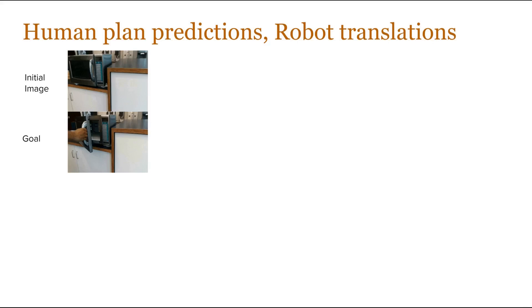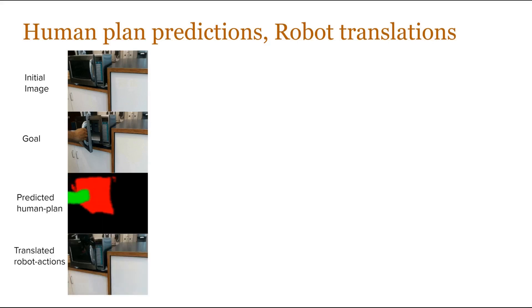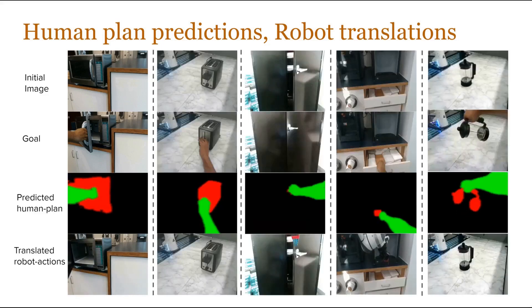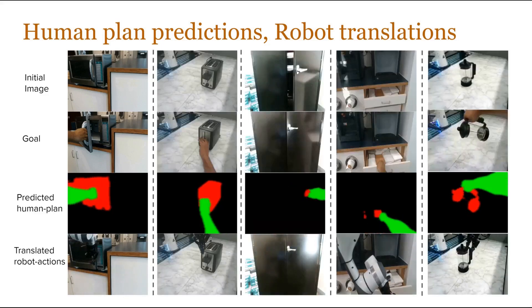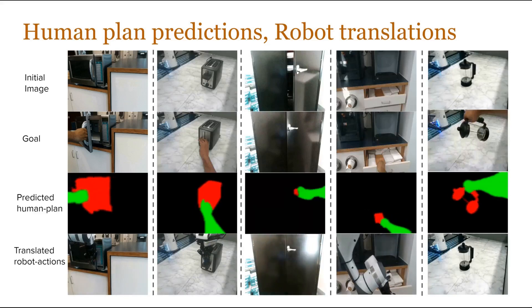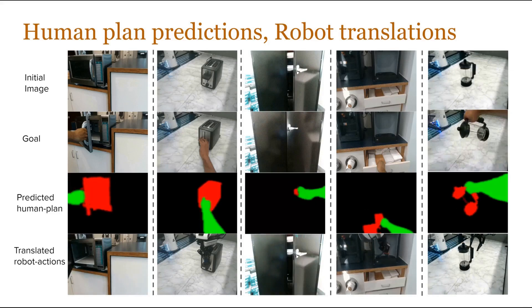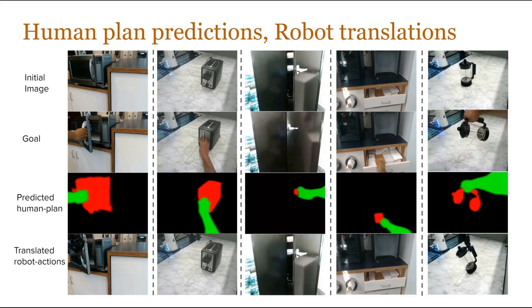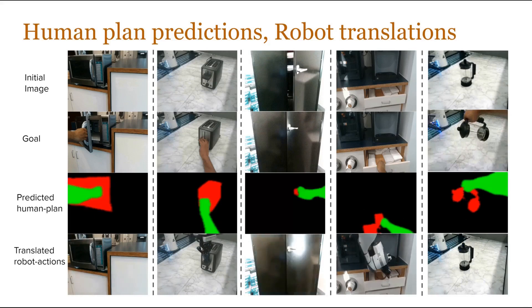Now let's look at some results for human plan predictions followed by robot translations. Given the initial image and a goal image, we first learn to output a plan of how a human would manipulate the object, and then we translate that into robot actions for execution in the real world. We can observe this across diverse scenes and goal images that correspond to manipulating different objects with different skills. We can see that the predicted human plans are plausible, and the translated robot actions actually correspond to manipulating the object as per the desired goal.